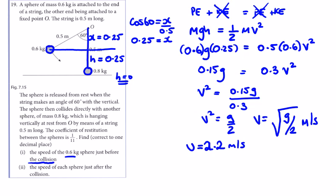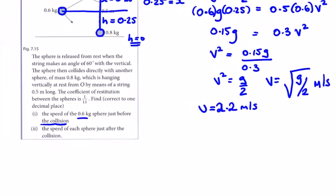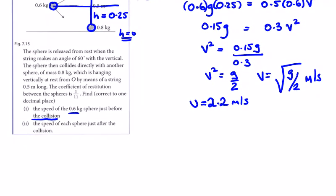Now we have a before and after collision situation. We're looking for the speed of each sphere just after the collision. The 0.6 kg sphere is traveling at 2.2 m/s, the 0.8 kg is at rest.